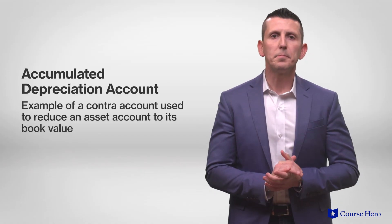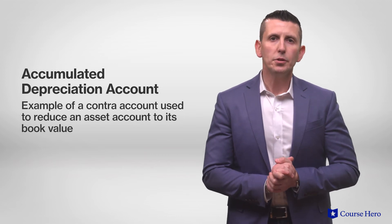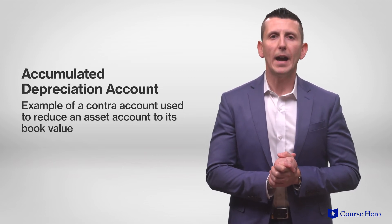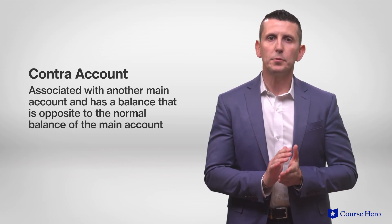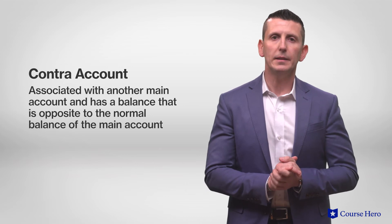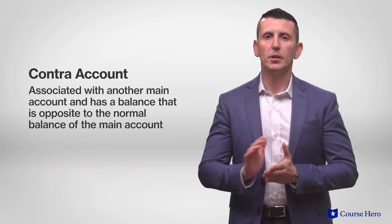The accumulated depreciation account is an example of a contra account used to reduce an asset account to its book value or carrying value. A contra account is associated with another main account — in this case, the fixed asset account — and has a balance that is opposite to the normal balance of the main account. The purpose of the accumulated depreciation account is to keep a running total of how much depreciation expense has been booked to date and by how much to reduce the original cost of the asset on the balance sheet.